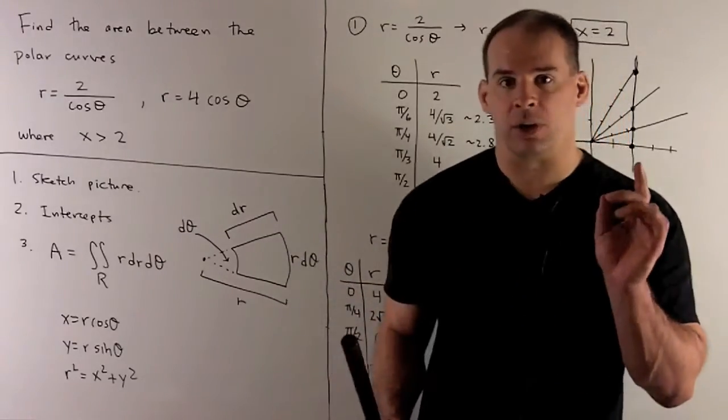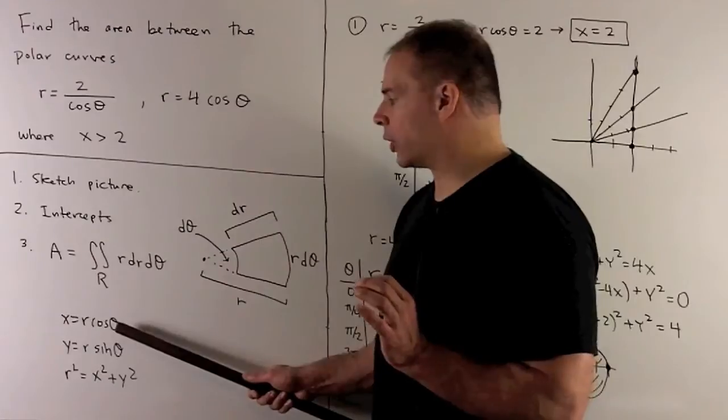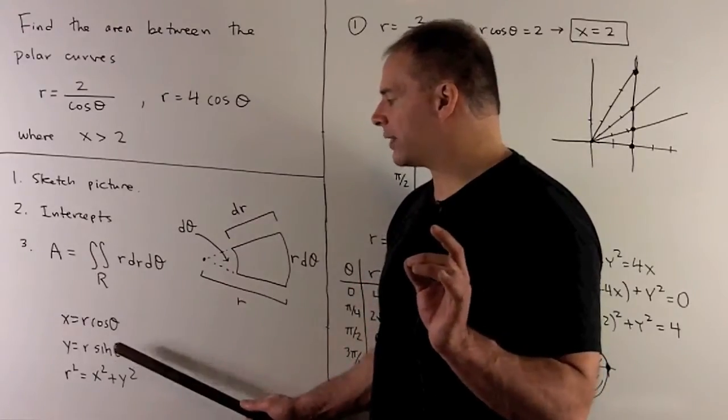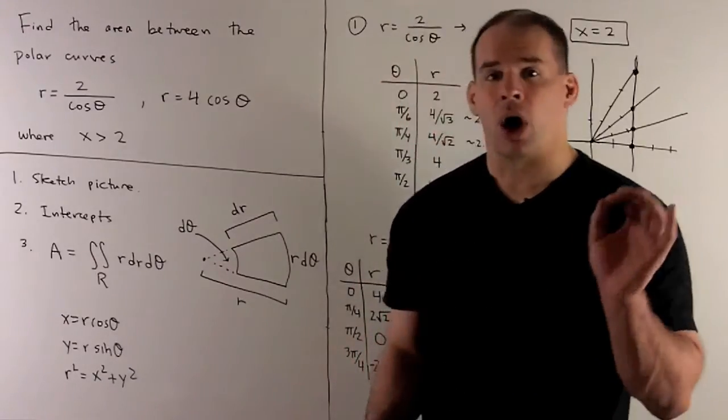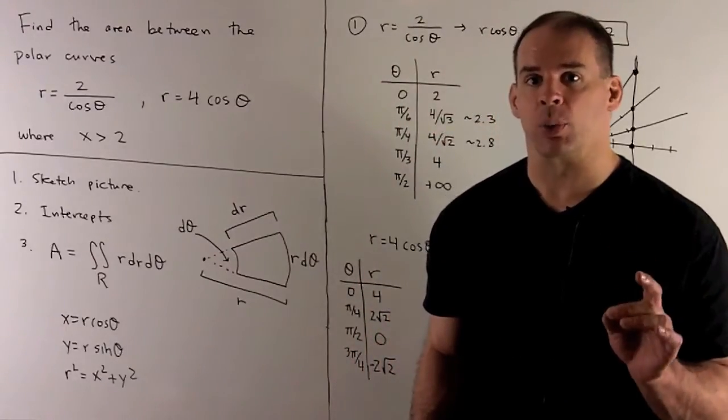We'll also need the equations: x equals r cosine theta, y equals r sine theta, and r squared equals x squared plus y squared.